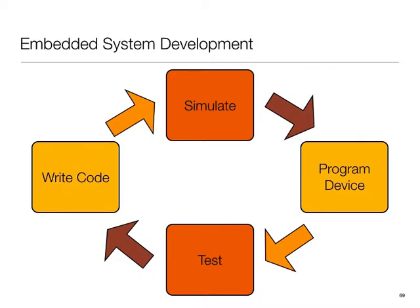Any hardware access you have to do has to be through the operating system because normally the OS hides or prevents direct access to hardware from the application. The OS's role is to share the hardware across multiple applications. The PRU, being a unique feature of the processor, changes some of this.